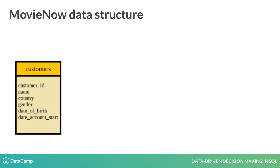Here we will give an overview of the tables in the database. First, in the Customers table we have a column Customer ID — a number which is a unique identifier for each customer. Then we have name, country, gender and date of birth. The final column is the date when the account for MovieNow was created.